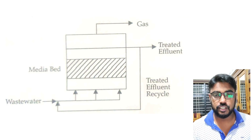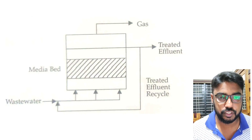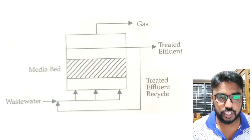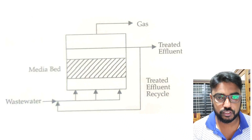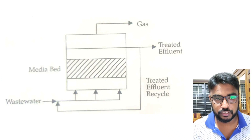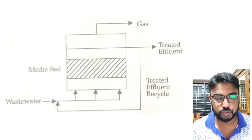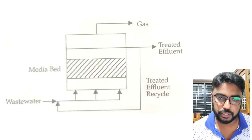In this figure, you can see the packed bed reactor. The effluent coming from the primary treatment plant enters upward into the chamber. You can see the packing medium through which the water passes and undergoes degradation, and the treated effluent goes out. Sometimes this effluent will again undergo treatment, recirculating into the chamber. The gas is removed from the top of the chamber.